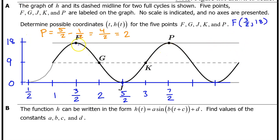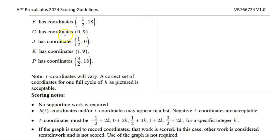Let's make a list. Point f is at 3 halves, comma, 18. Point g is at 2, comma, 9. Point j is at 5 halves, comma, 0. Point k is at 3, comma, 9. And point p is at 7 halves, comma, 18. There are other correct sets of coordinates. For example, here's another one. Notice that negative values of t are acceptable.